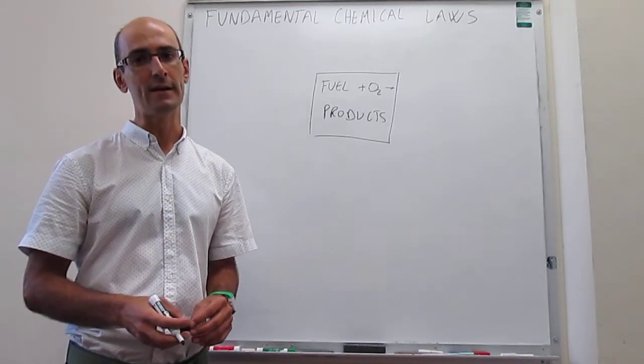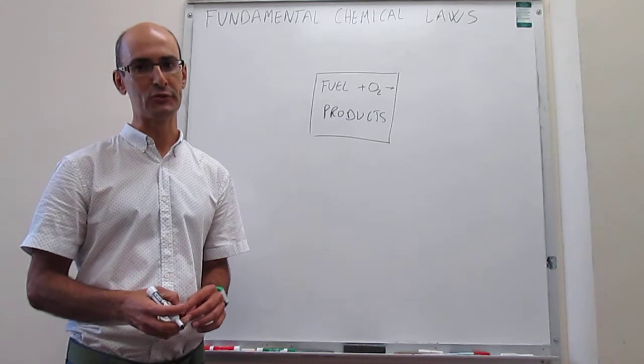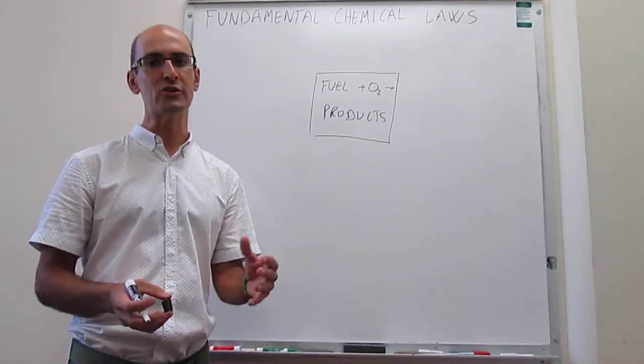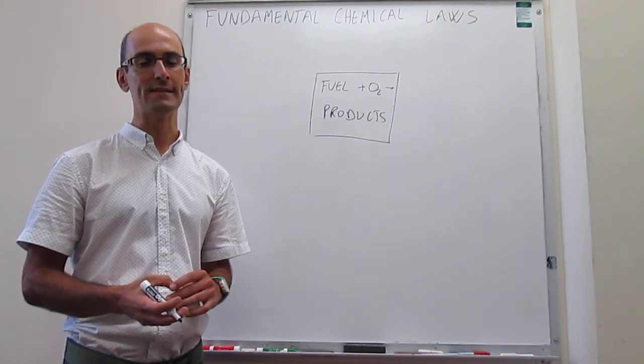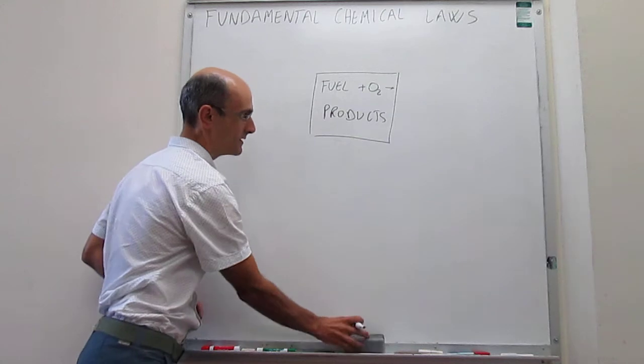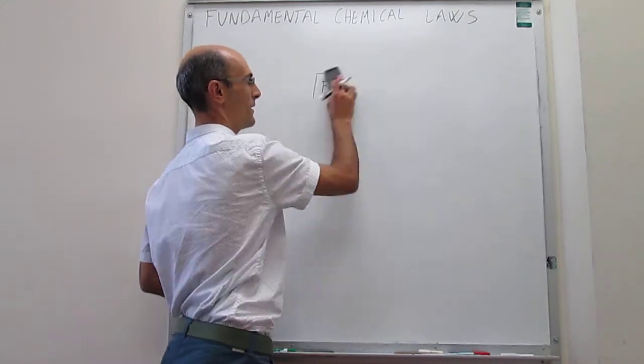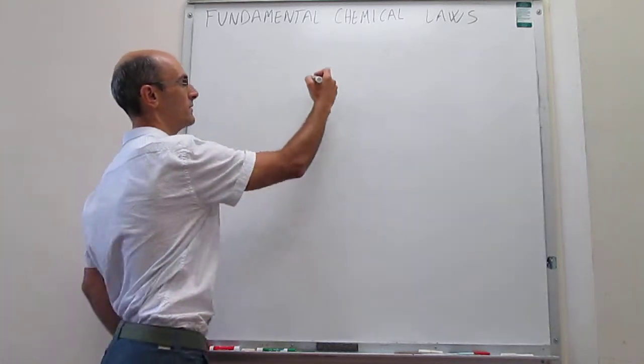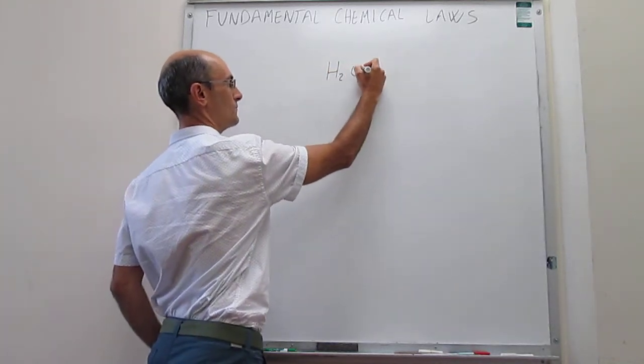The second one is the law of definite proportions. This is a law by Joseph Proust at the turn of the 18th to 19th century. What Proust observed is that we have a compound, whatever it might be - let's take a simple one like water, H2O.